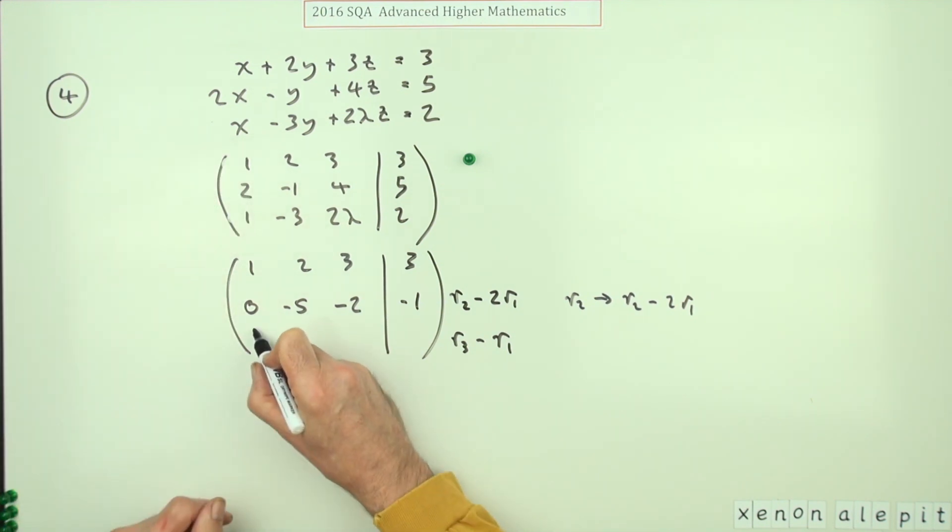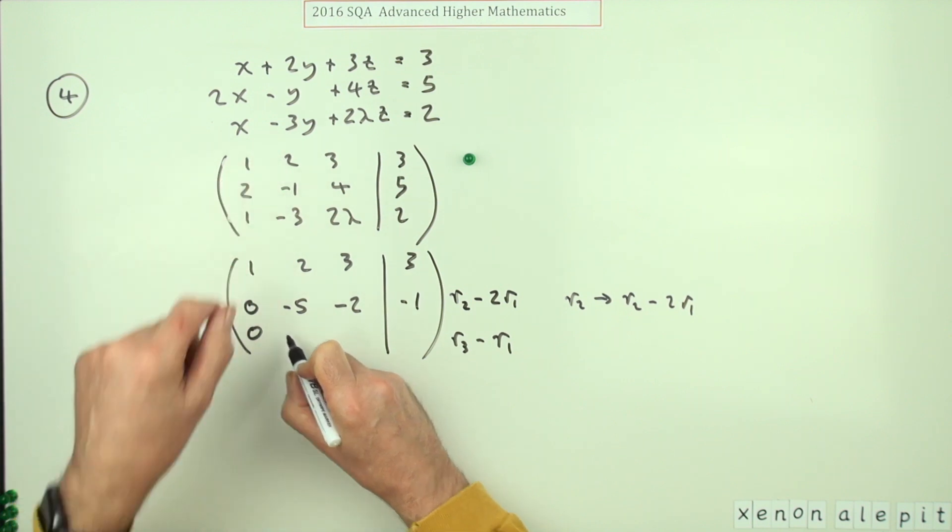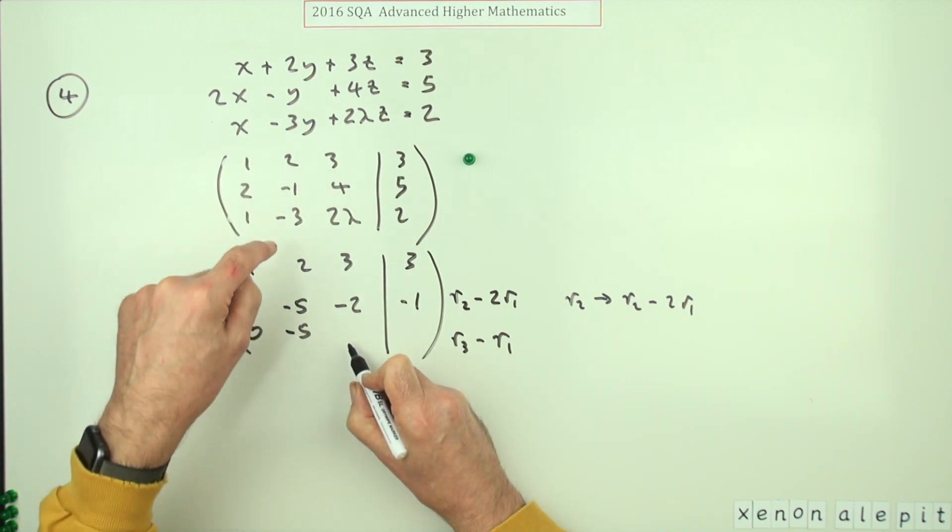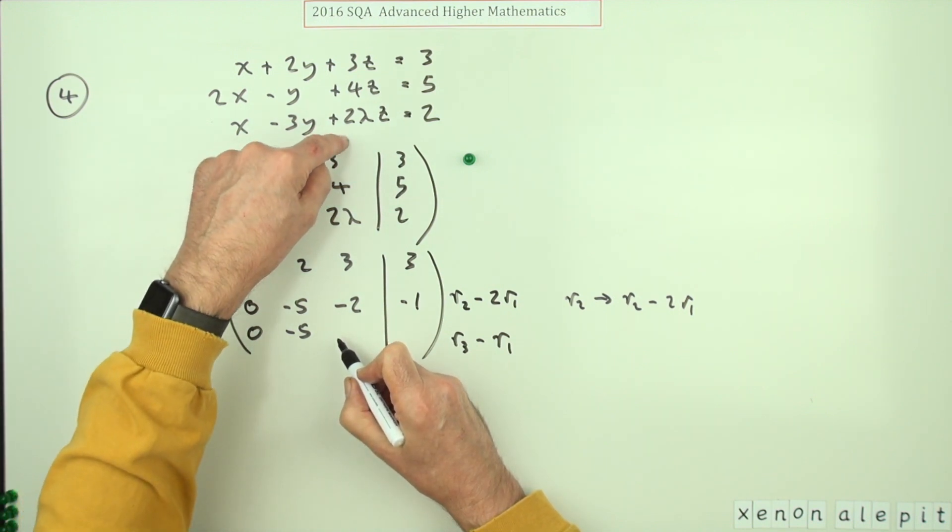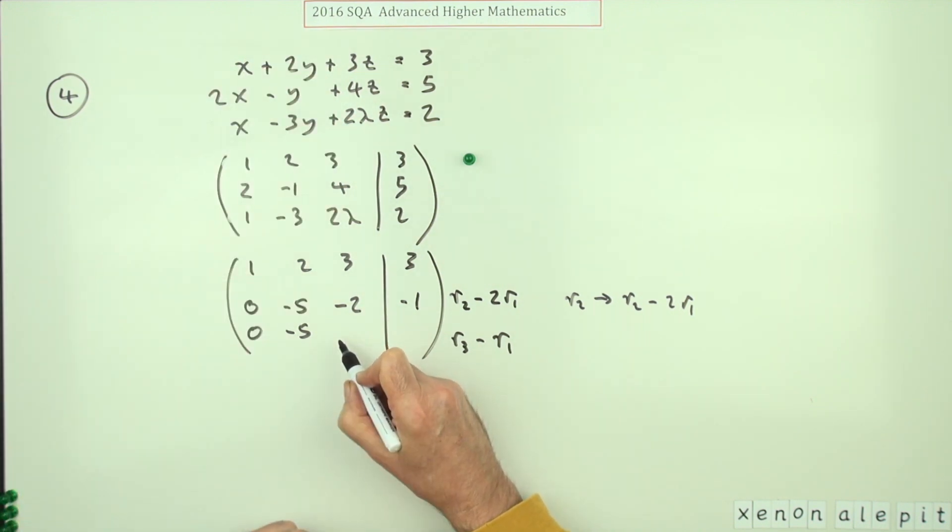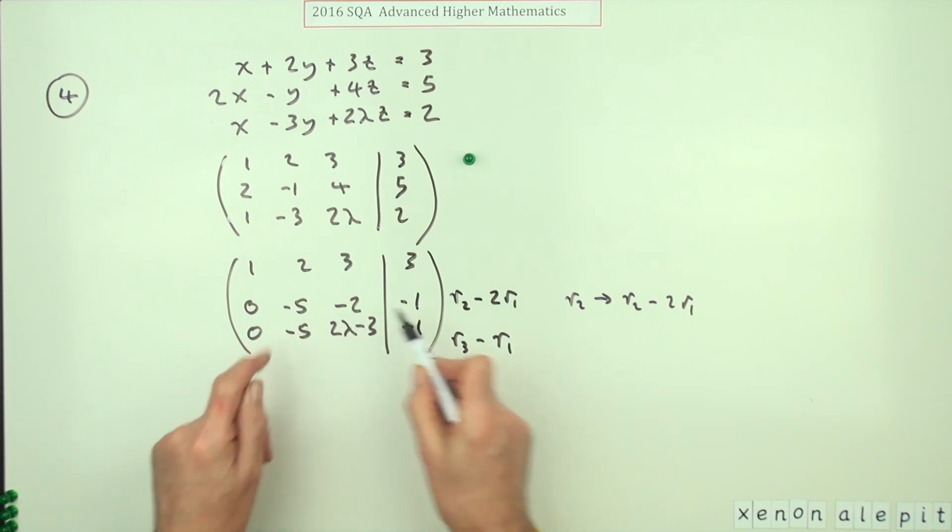Same again here. This is simple, it's just a subtraction. One take away one is zero. Negative three take away two is negative five. Oh look at that, you can see a redundancy popping out at you now. But this one though: two lambda take away three, two take away three is negative one.